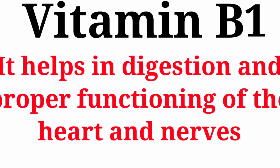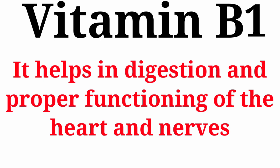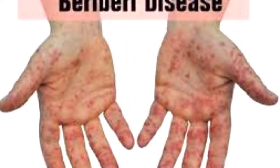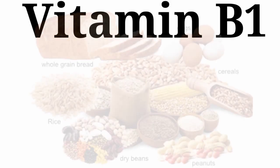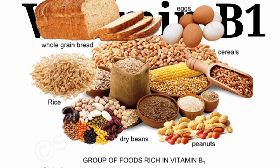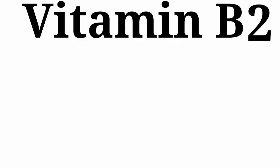Now we discuss vitamin B. Vitamin B1: its importance is that it helps in digestion and proper functioning of the heart and nerves. The deficiency disease due to lack of vitamin B1 is beriberi. The food sources of vitamin B1 are grains like rice and whole wheat, green leafy vegetables, milk, egg, fish, and many more.